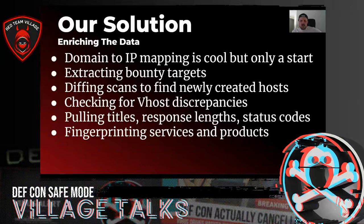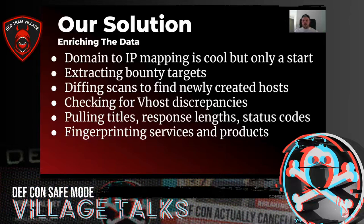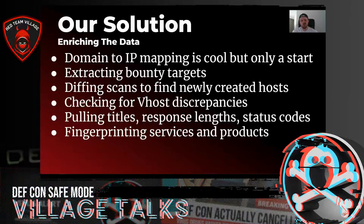Another really cool technique is vhost discrepancies — virtual host discrepancies with the host header. We have all these targets, but what's a key differentiator for things that might be interesting? One is how they handle virtual hosts. We found hosts where you hit it by IP and get one result, hit it by its domain and get a different result, and hit it with a localhost host header and get access to stuff you wouldn't normally. The final technique was fingerprinting — pulling titles, response links, and status codes to fingerprint specific services, letting us key in on large technologies like the Grafana bug.